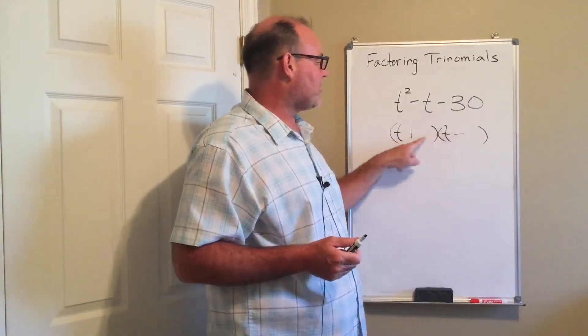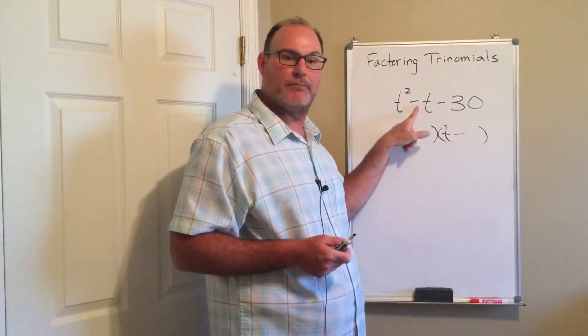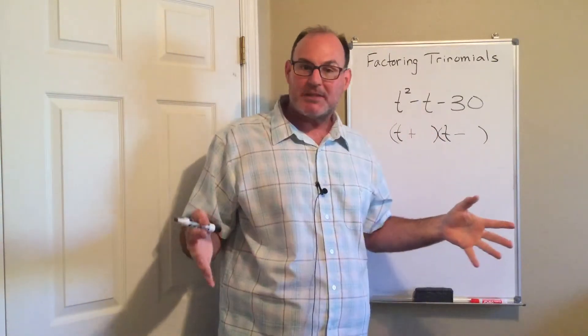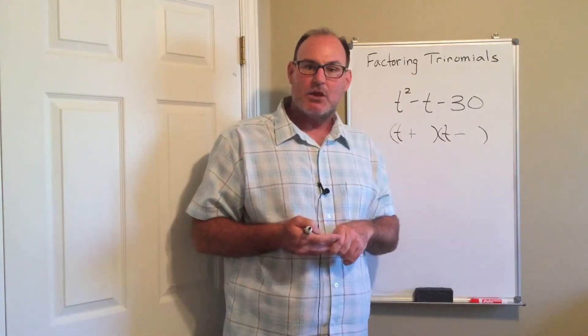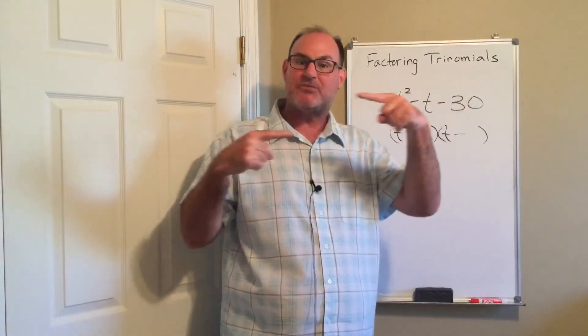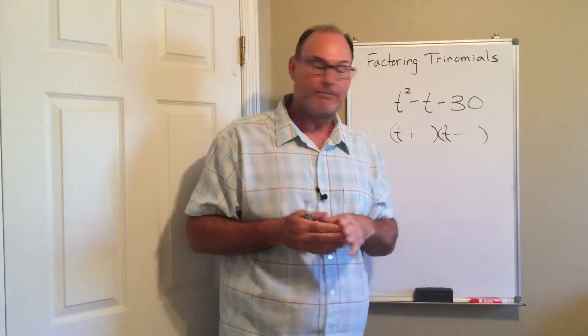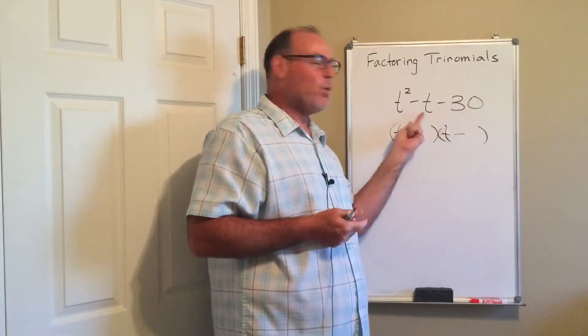Now, I need to find out what are the numbers that when I add up my outers and inners, I get a negative 1. Remember from your arithmetic class that when you add numbers of different signs, you don't add the values. You take the difference between the values because they are going different directions on the number line. So I need two factors of 30 that are actually 1 apart.